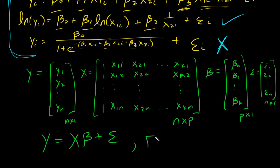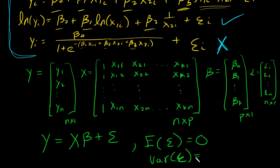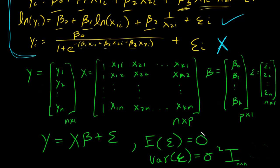The model assumptions in matrix form are: the expected value of epsilon equals zero — a vector of n by one zeros — and the variance of epsilon equals sigma squared times I, where I is the n by n identity matrix with ones on the diagonal and zeros everywhere else. This says that the variances of the errors are sigma squared and the covariances are zero, so these are uncorrelated error terms.